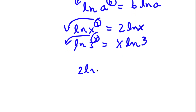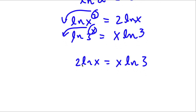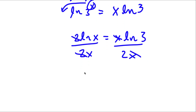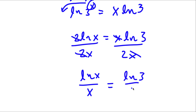Now I have 2 ln x is equal to x ln 3. If I divide both sides by 2x, on the left-hand side the 2 and x cancel, and on the right-hand side the 2 and x cancel. So I'm left with ln x over x is equal to ln 3 over 2.